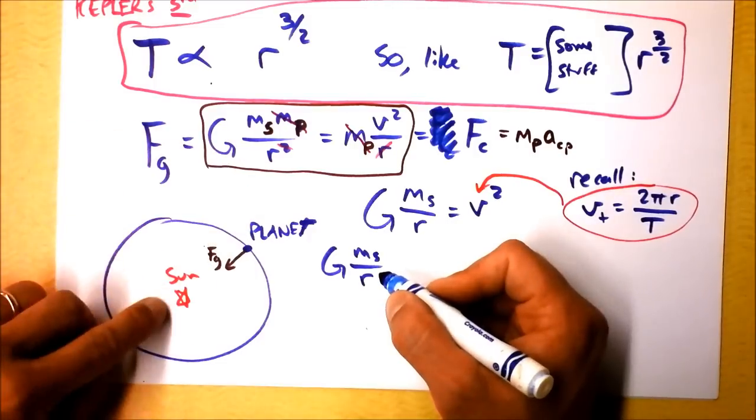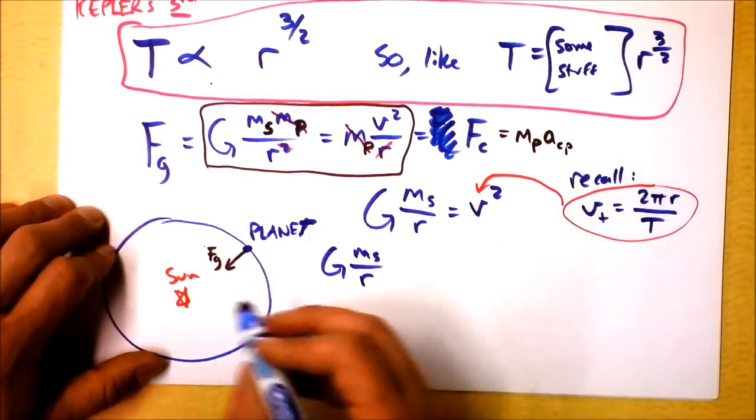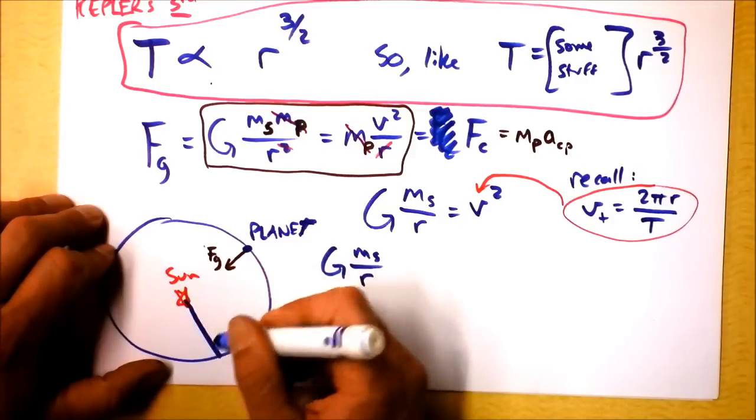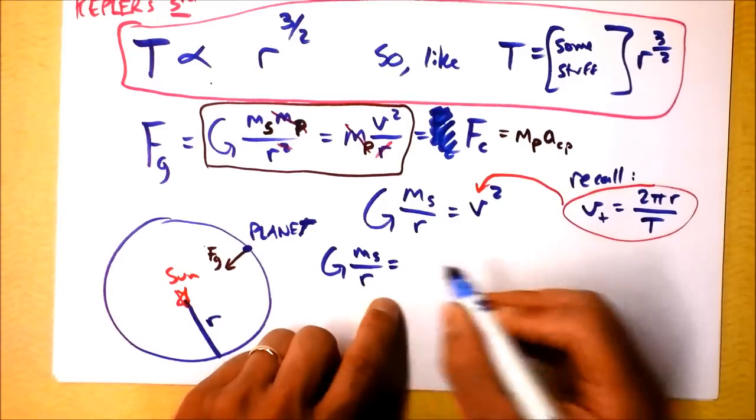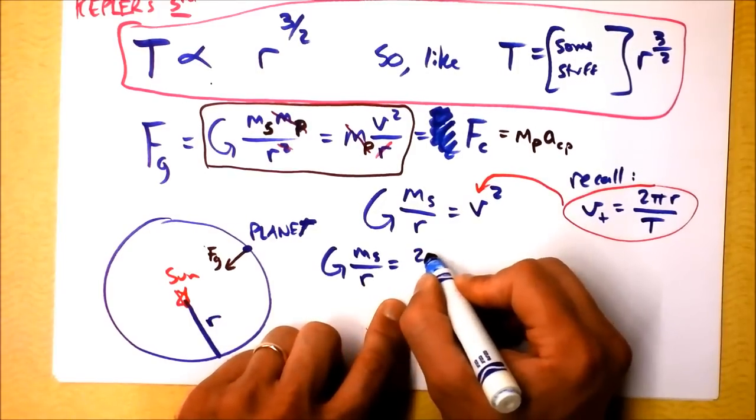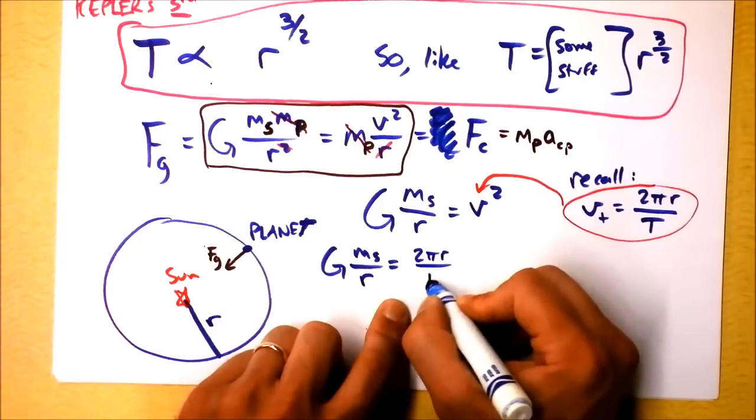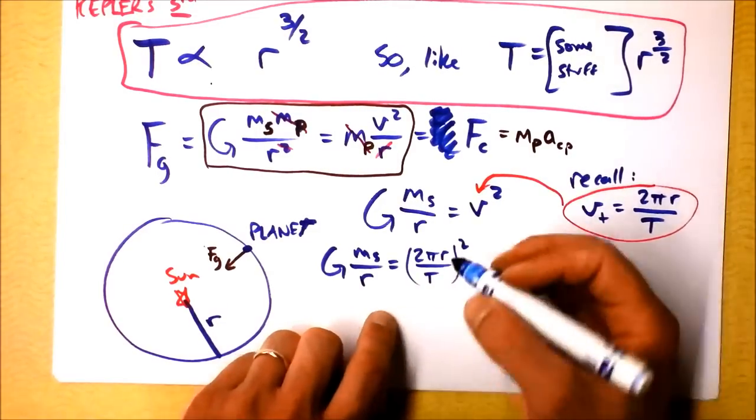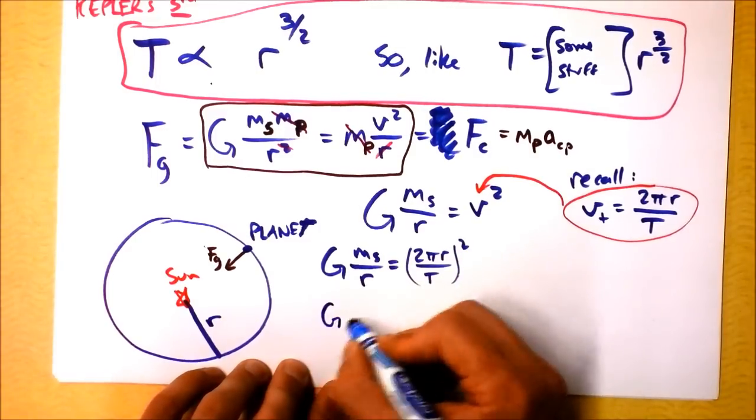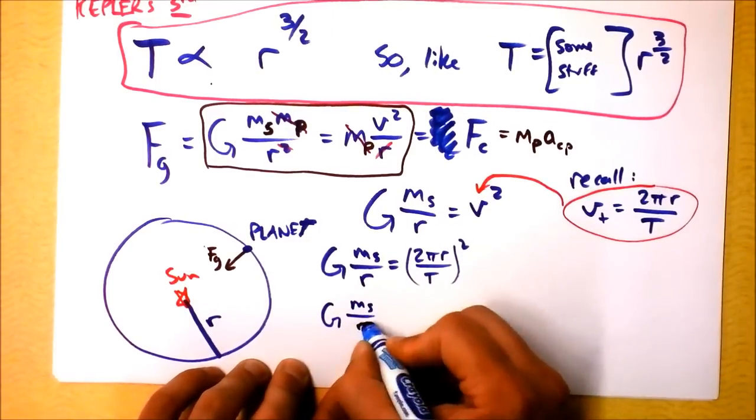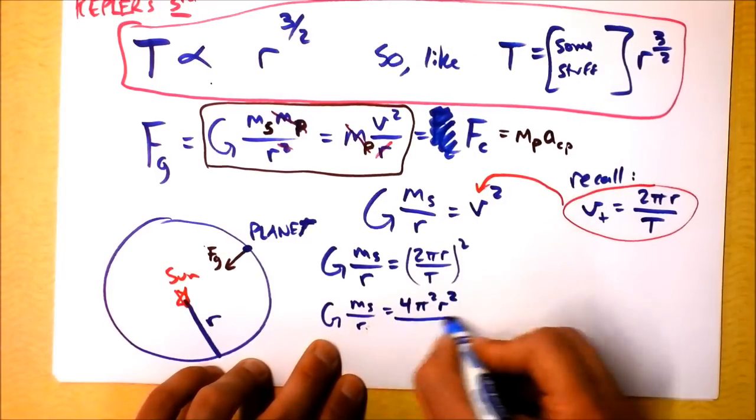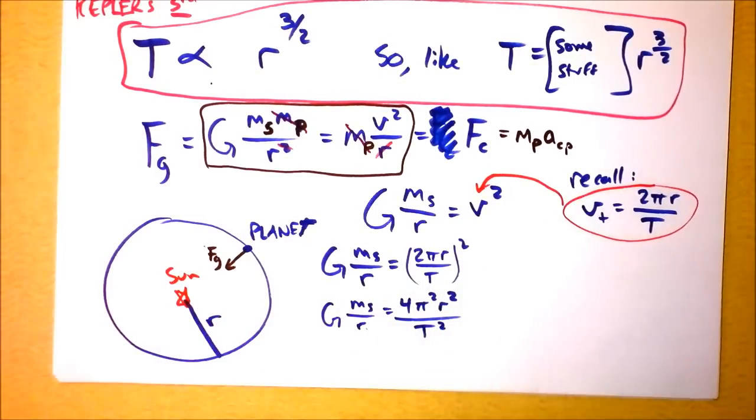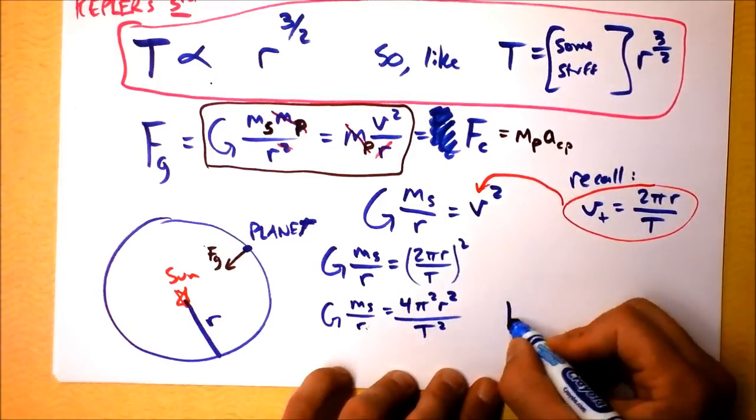What radius? Is this the radius of the orbit or the radius of the sun or the radius of the planet? We should specify that. That's the radius of the orbit. This equals 2 pi r divided by period, the whole thing, squared. So let's spread it out a little bit. We've got capital G times the mass of the sun divided by the radius is 4 times pi squared times r squared divided by period, squared. I'm going to solve this for t squared.